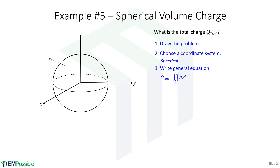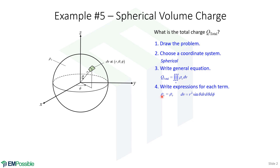Write the general equation. I go to the table in the notes that lays out the recipe and pull out the equation for total charge for a volume charge problem. It's a triple integral of the volume charge density times the differential volume. Next, we write expressions for all the different things, which in this case is just rho sub v and dV. Rho sub v is just a constant. For the differential volume, we go back to our vector calculus table — for spherical coordinates, dV is r squared times sine theta dr d theta d phi.